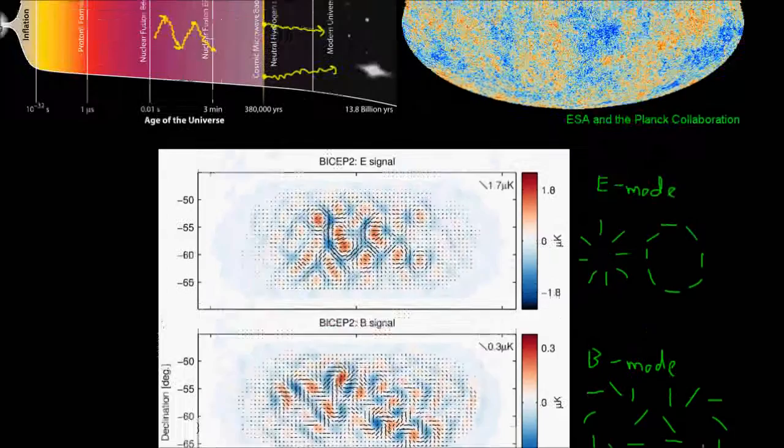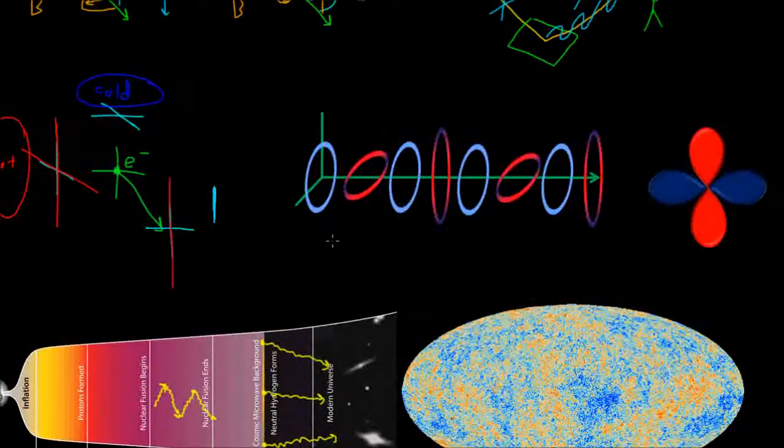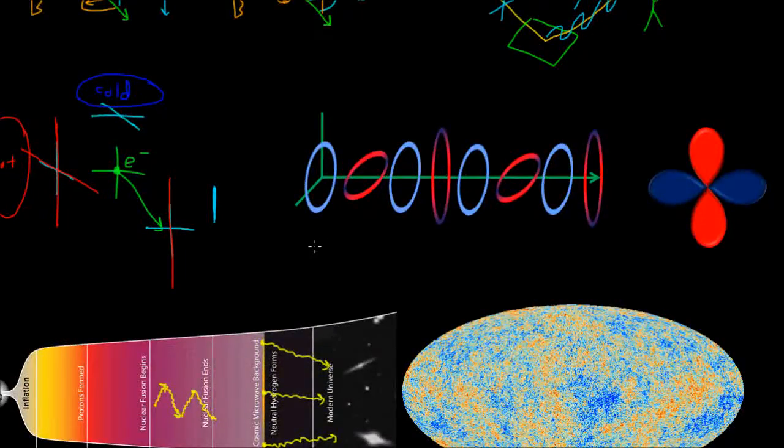So very briefly, gravitational waves are ripples in the curvature of space-time. And if a gravitational wave is propagating in a certain direction, they propagate at the speed of light and can basically pass through anything so they're not blocked by the plasma in the early universe.